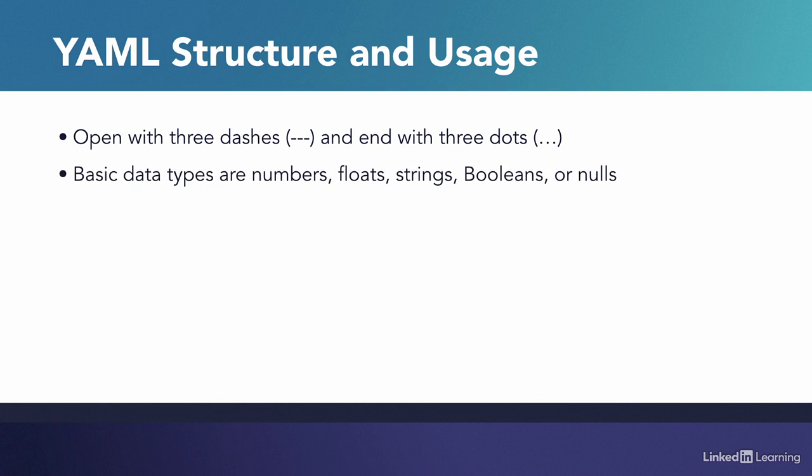YAML basic data types are signed integers, floats, strings, booleans, or nulls. String values in YAML are sometimes left unquoted, but I personally find it easier to always quote them.